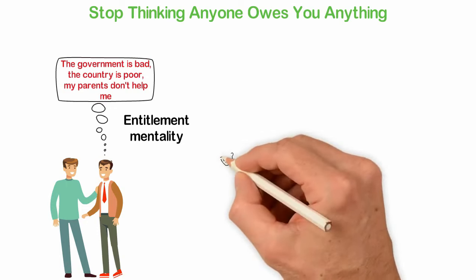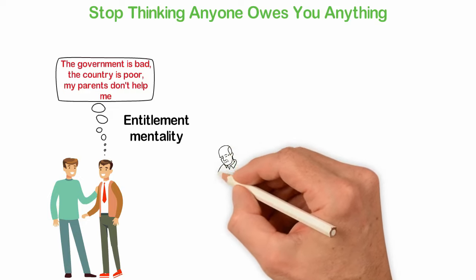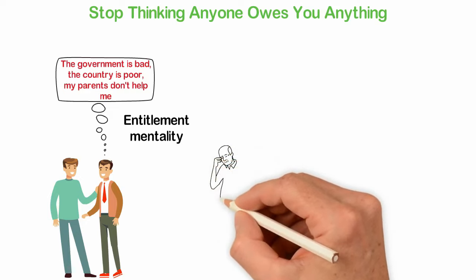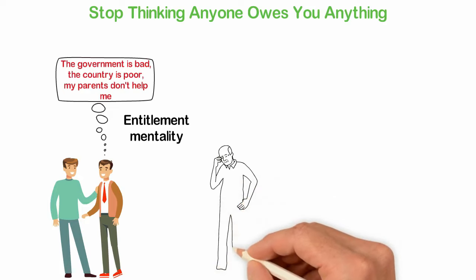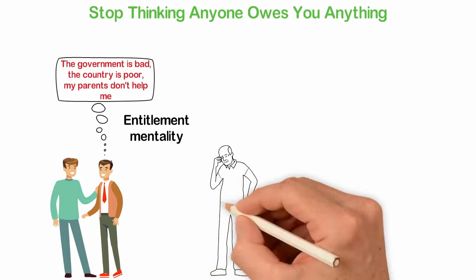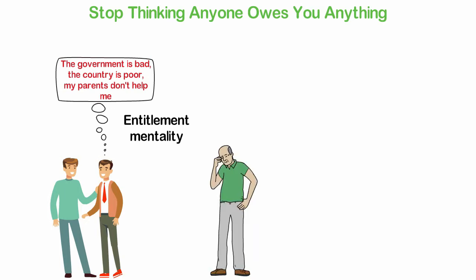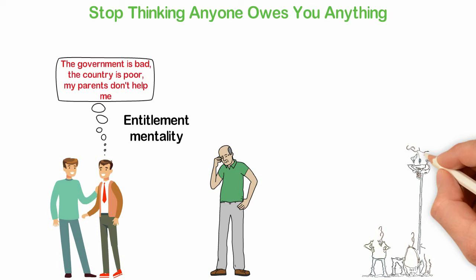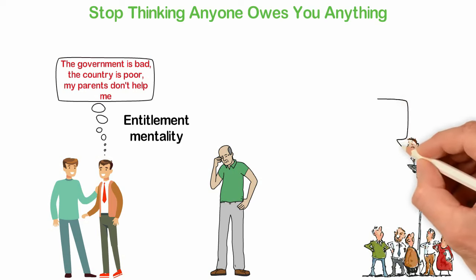Let's face it, nobody owes you anything. Yes, your parents had sex to invite you to the world and yes, the government collects taxes from you and yes, someone else seems to owe you something but if you depend and wait for all these people you think should be responsible for your life, you'll be disappointed. The reason for that is simple, nobody understands your pains. People may love you but they don't understand your life because they have their own lives.